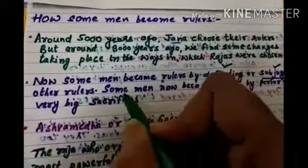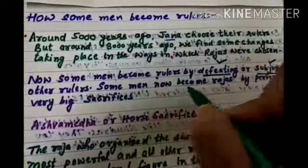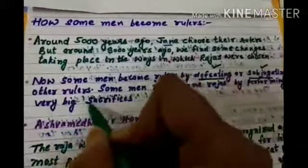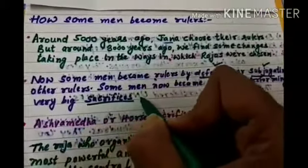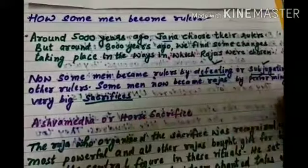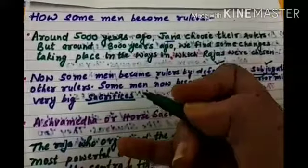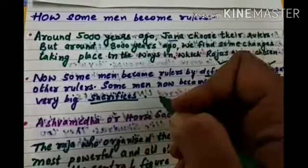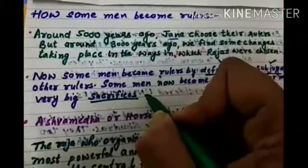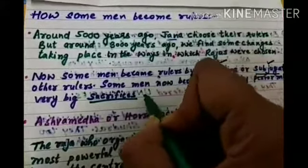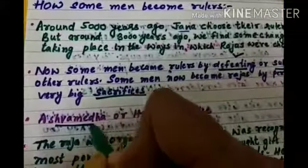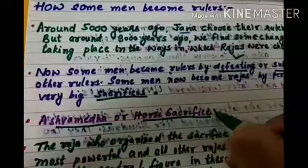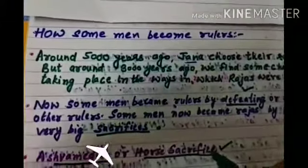Now some men became rajas by performing very big sacrifices. अब कुछ लोग rajas कैसे बनते थे — बड़े बड़े sacrifices करके भी राजा बन जाते थे। अब इसमें अगर हम बात करें बड़े sacrifices की तो उसमें आता है Ashwamedha Yag — horse sacrifice — जिसके बारे में हम अभी discuss करेंगे।